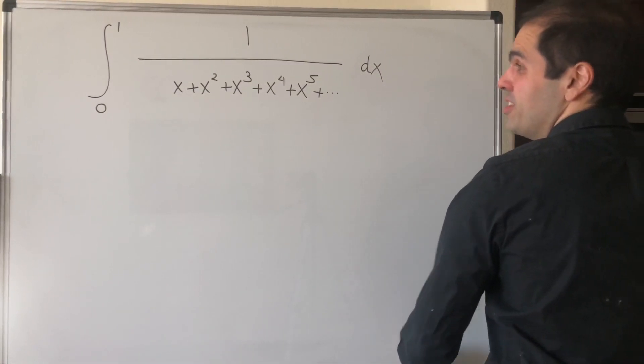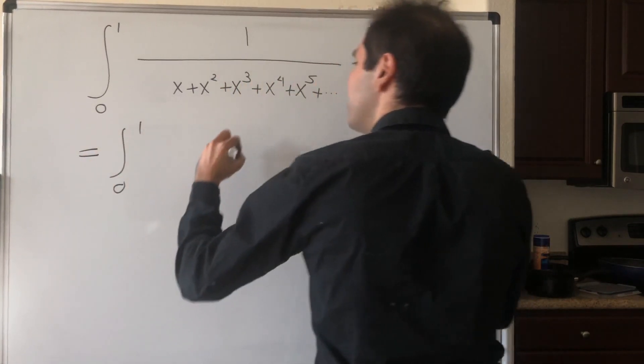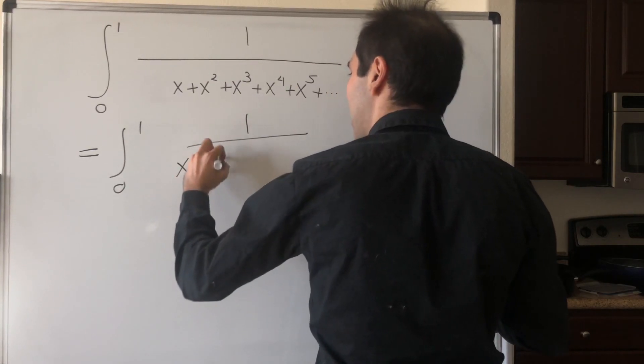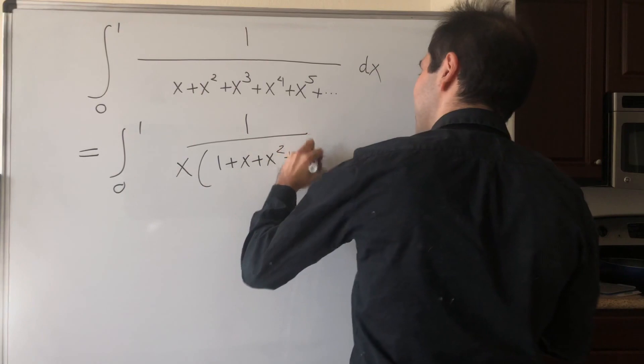Well, then you get some interesting behavior, because notice, this is the same thing as the integral from 0 to 1 of 1 over x times 1 plus x plus x squared plus dot dot dot dx.